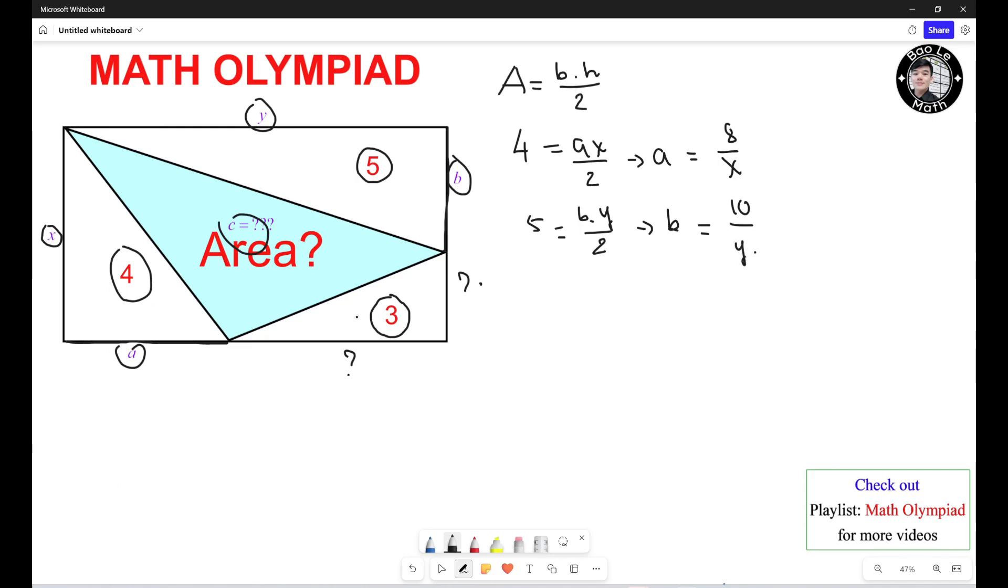Now I need to calculate the area of this one. So I know that the side length right here could be S minus B. The side length right here could be Y minus A. Alright. So this is 3. So 3 equals S minus B times Y minus A divided by 2. So it turns out to be S minus B times Y minus A equals 6.